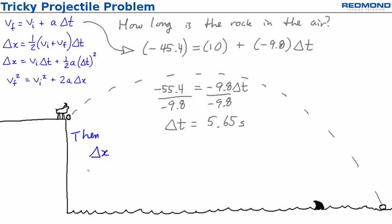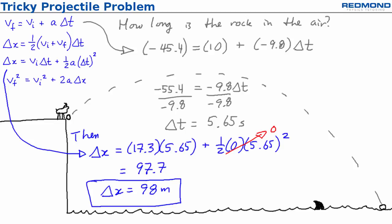Then Billy substitutes the 5.65 seconds into his equation for delta x, getting x final equals 98 meters. Satisfied with this result, Billy finds some grass to nibble and then starts searching for another rock.